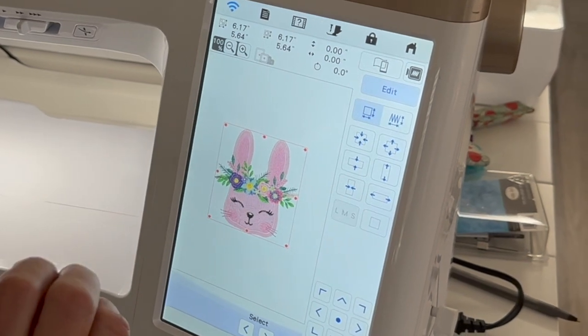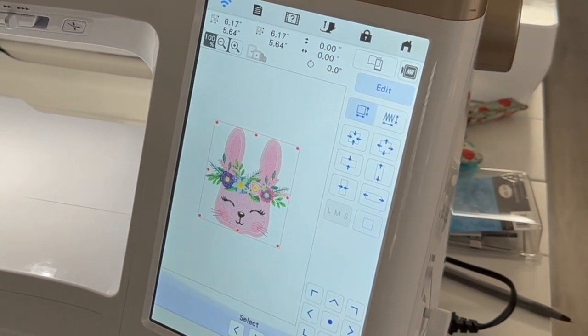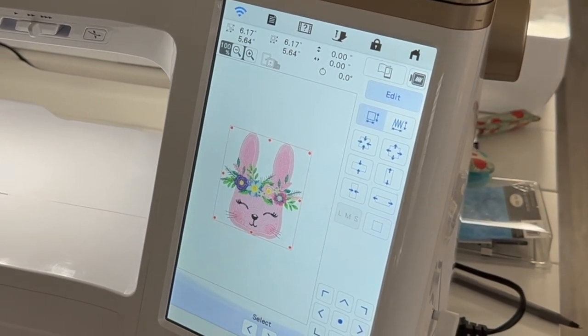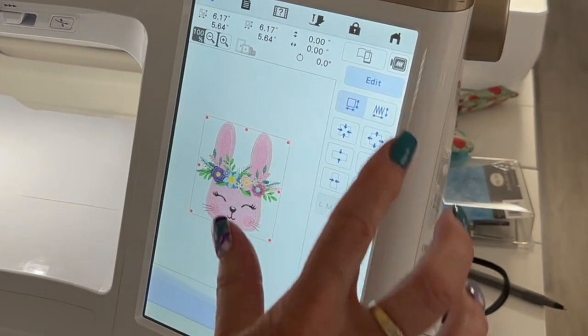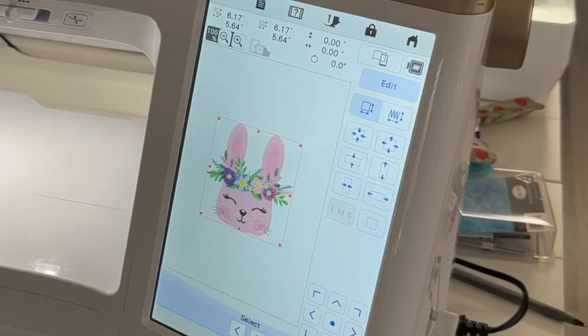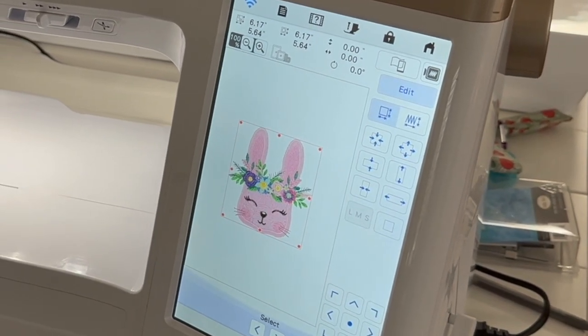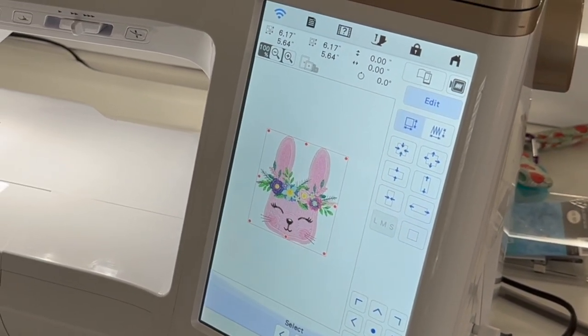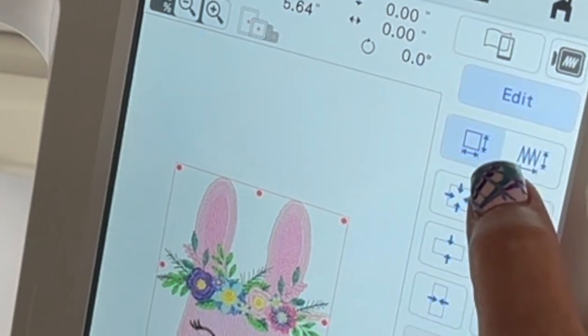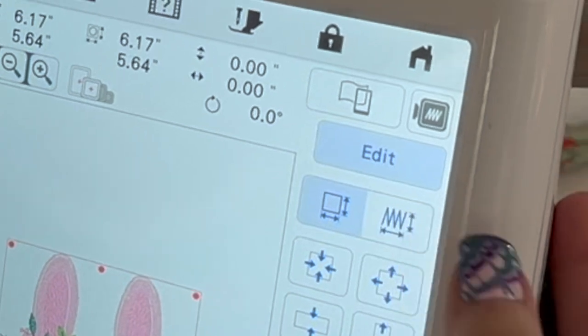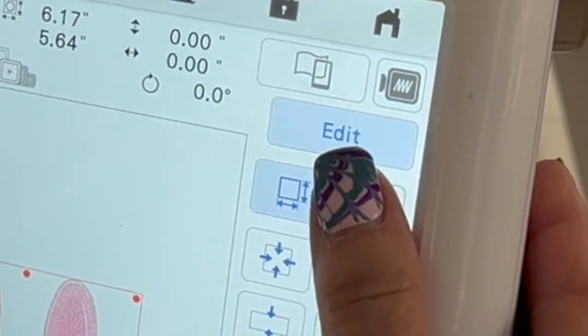At that point it does not change your stitches in any way. It just stays the number of stitches in that particular icon. Now say we want to change it larger or even smaller than that and we can do that. So now we're going to push the little icon that has the little zigzag stitch in it.